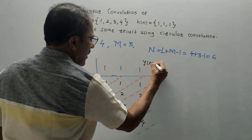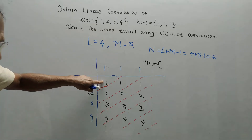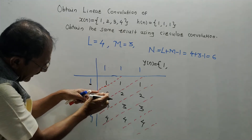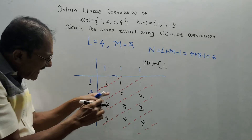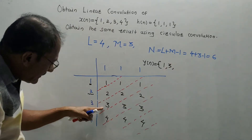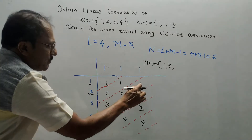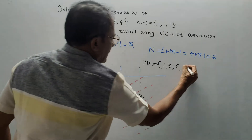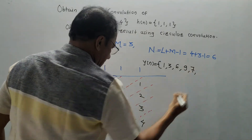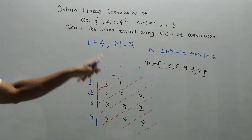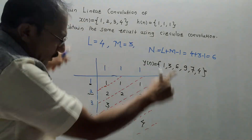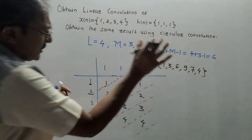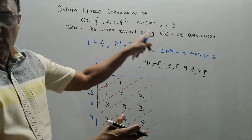From the diagonals, you can directly write the answer of linear convolution y(n). Inside the first diagonal: 1. Second diagonal: 2 + 1 = 3. Third diagonal: 3 + 2 + 1 = 6. Fourth diagonal: 4 + 3 + 2 = 9. Next value is 7 (4 + 3), and the last value is 4. So y(n) = {1, 3, 6, 9, 7, 4}. This is the answer of linear convolution; no circular convolution has been performed yet.